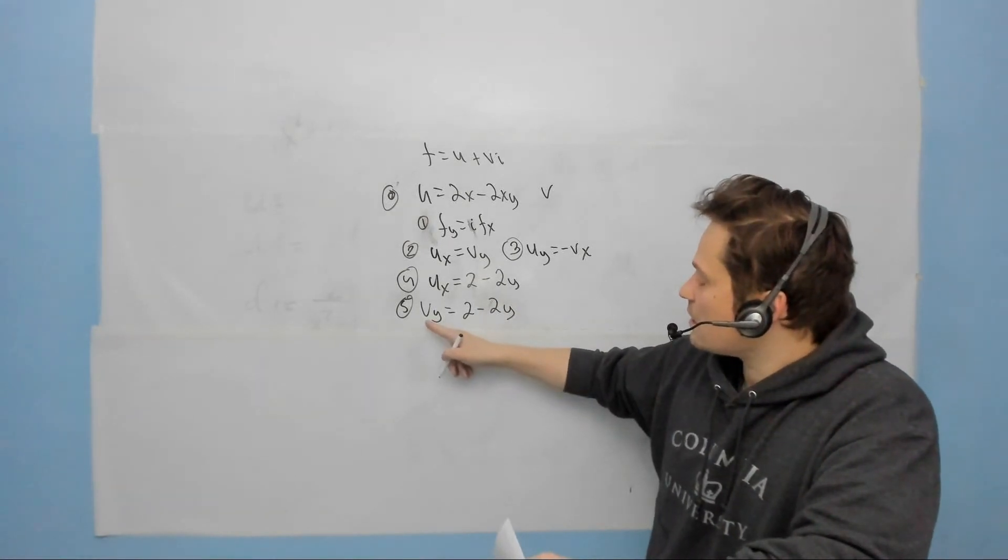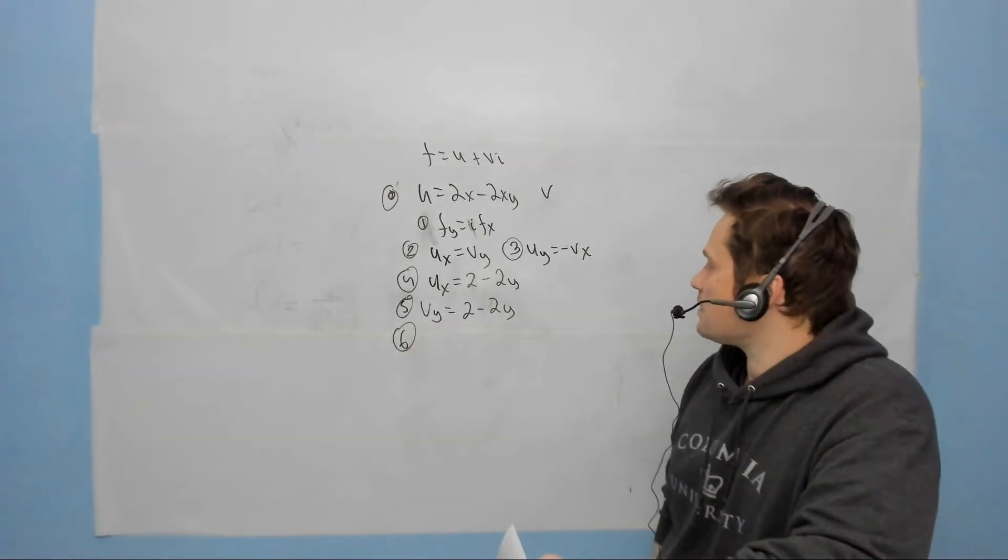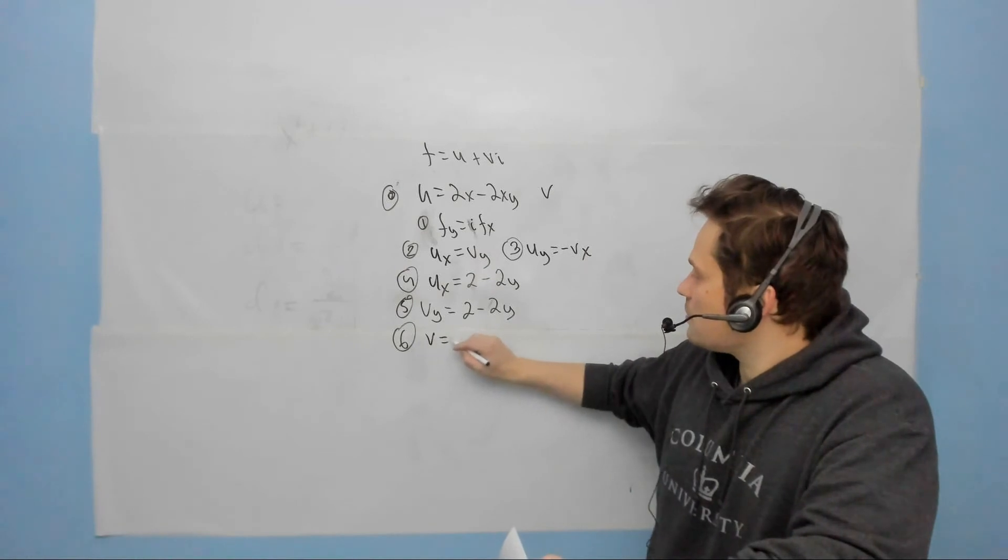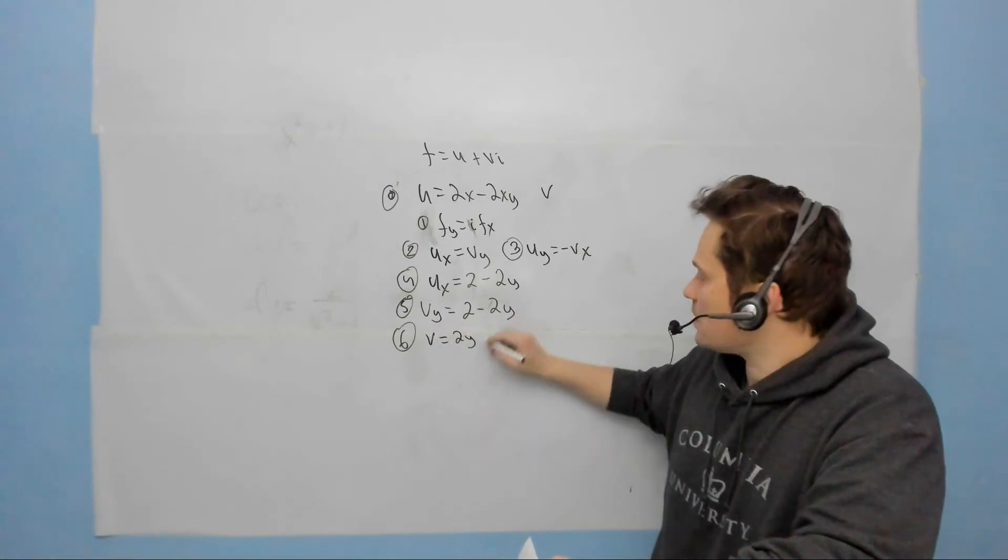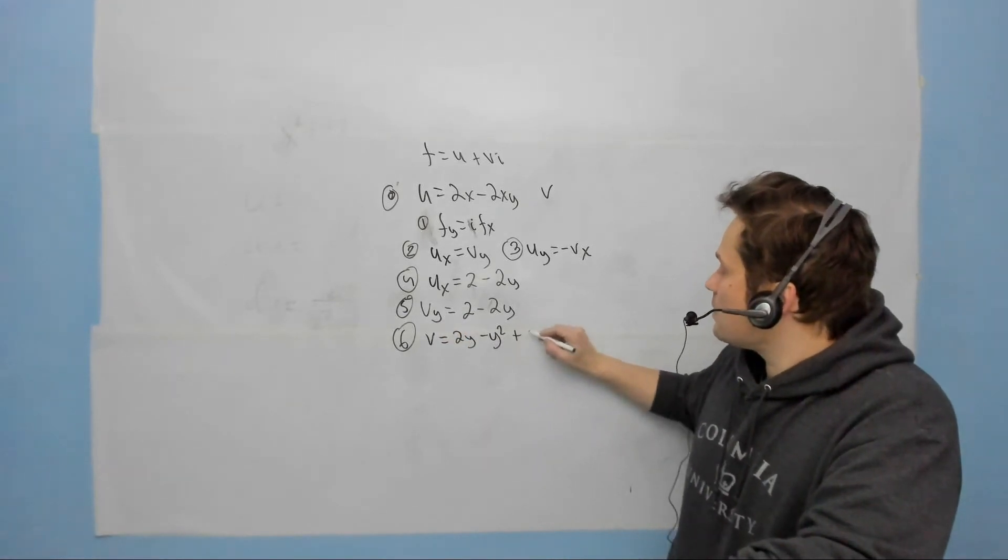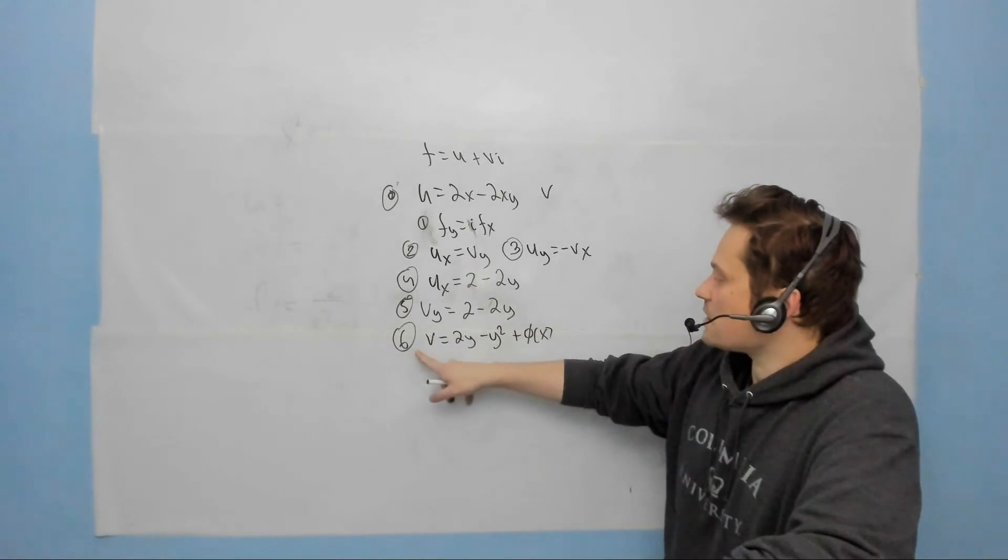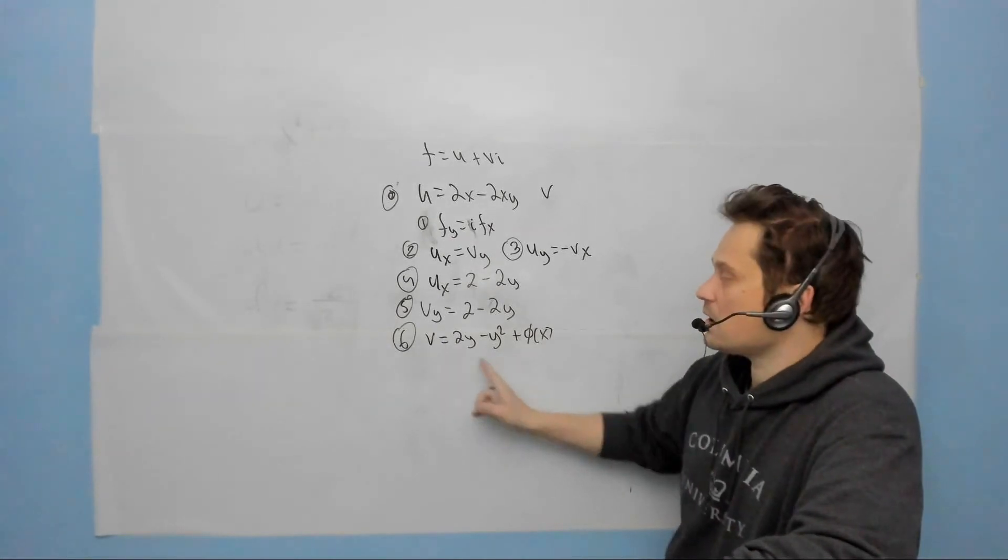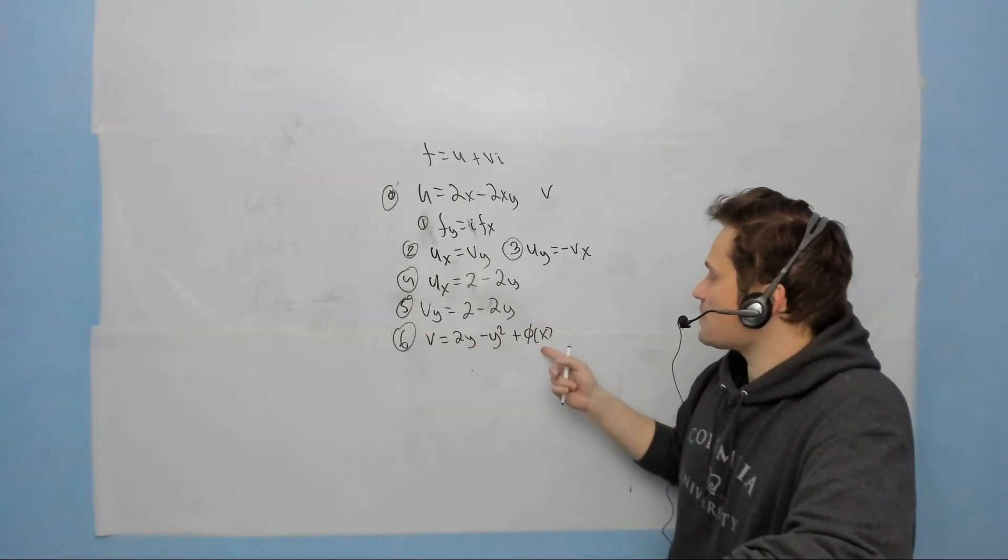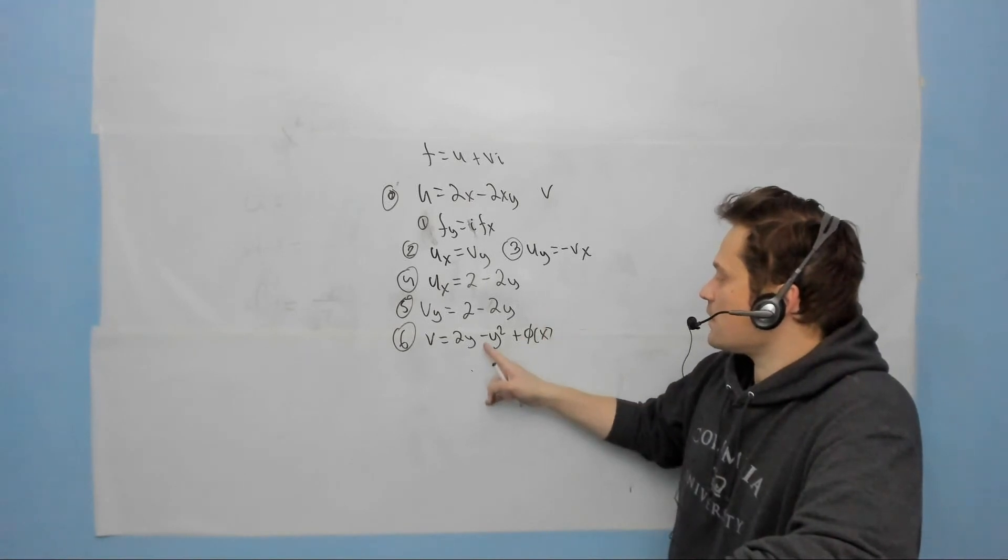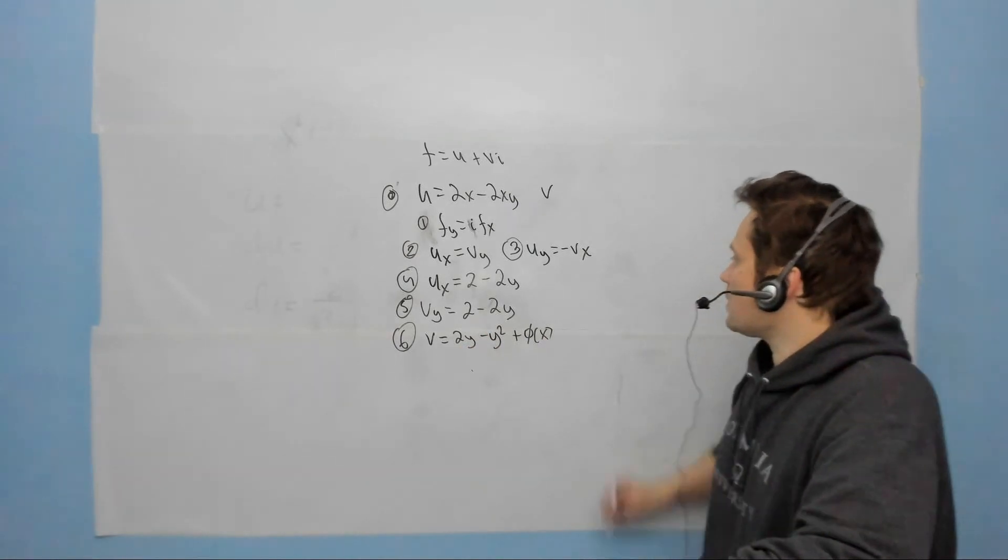But now I have v, the derivative of it with respect to y. That's getting me close, because at step 6, what I can do is write v equals 2y, so integrating 2 to get 2y with respect to y, minus y squared, and then plus, and you have to be really careful, put like a φ of x. The reason is that if I take step 6 and differentiate the right side term by term with respect to y, it will get back to step 5 where it's just 2 minus 2y. The derivative of φ of x with respect to y is 0, so it will go away. So let's continue here.